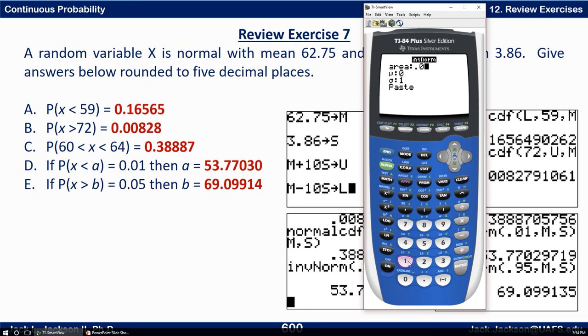On D, the probability that X is less than A is 0.01. That means 0.01 is the probability to the left, and we use our mean and standard deviation. Notice there's no need to standardize this because the calculator handles any mean and standard deviation for a normal distribution. This gives much better and quicker answers than a normal table. And there we go.